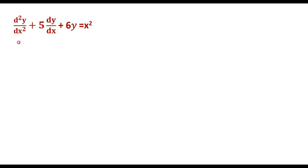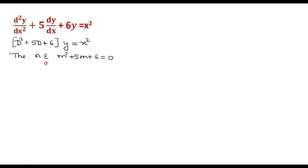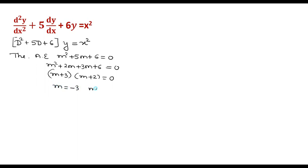Let's take one more example. The given differential equation is (D² plus 5D plus 6)y equals x². Write the auxiliary equation: m² plus 5m plus 6 equals 0. On factorization, (m plus 3)(m plus 2) equals 0, so m equals minus 3 and m equals minus 2 — real and distinct roots. Therefore, the complementary function is c₁e^(−3x) plus c₂e^(−2x).